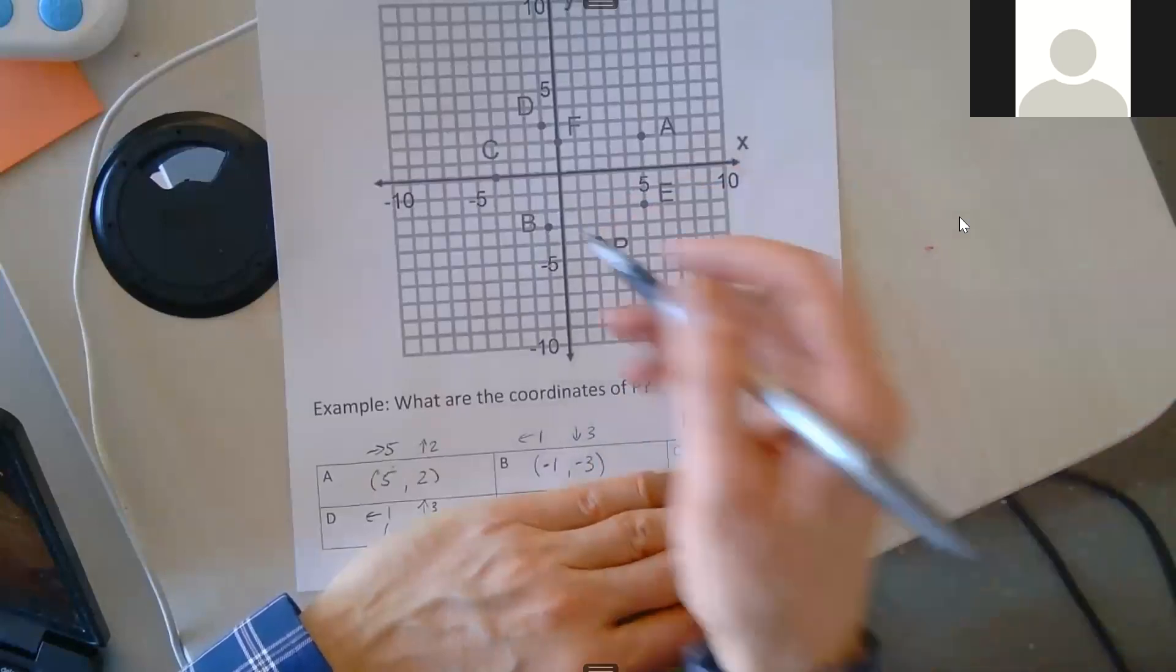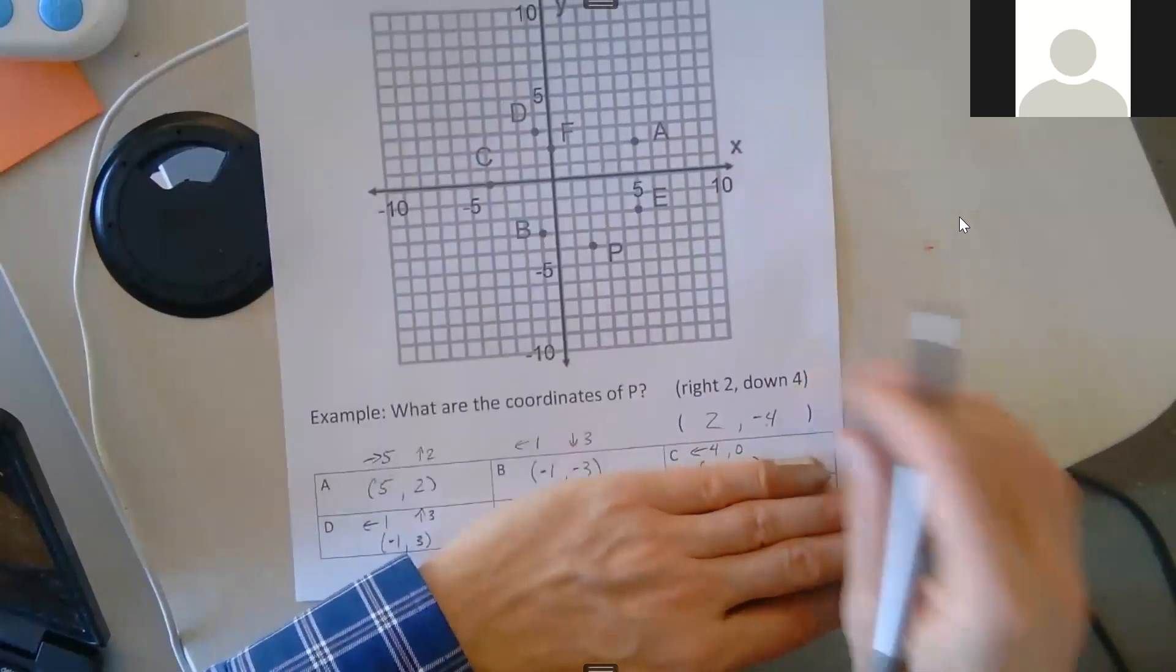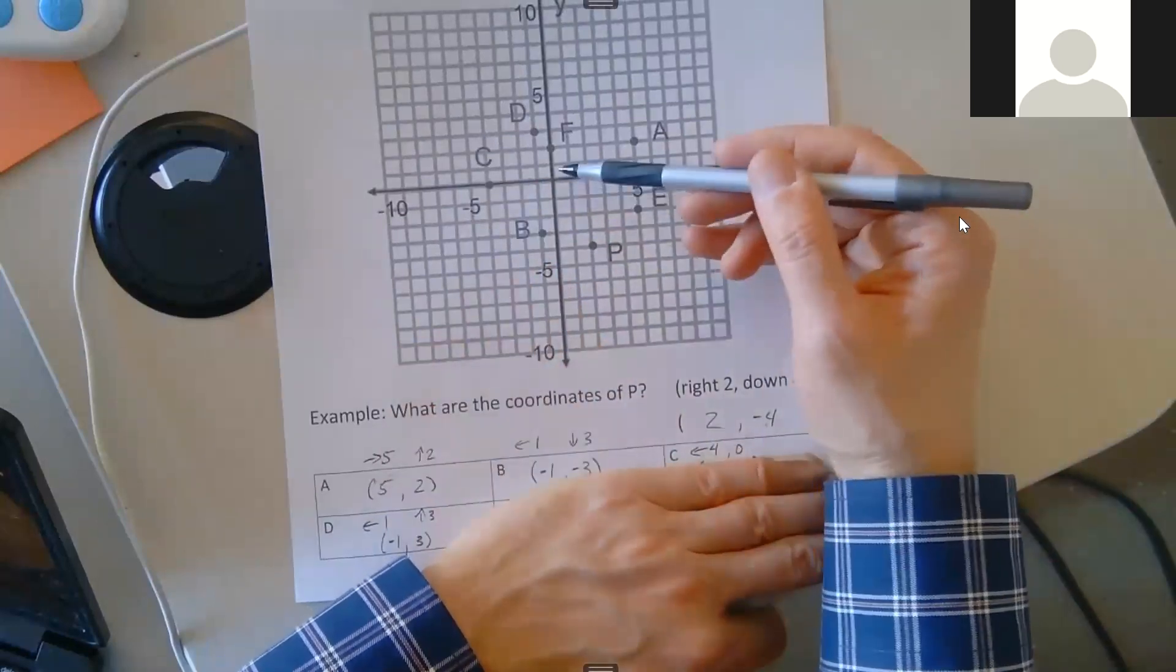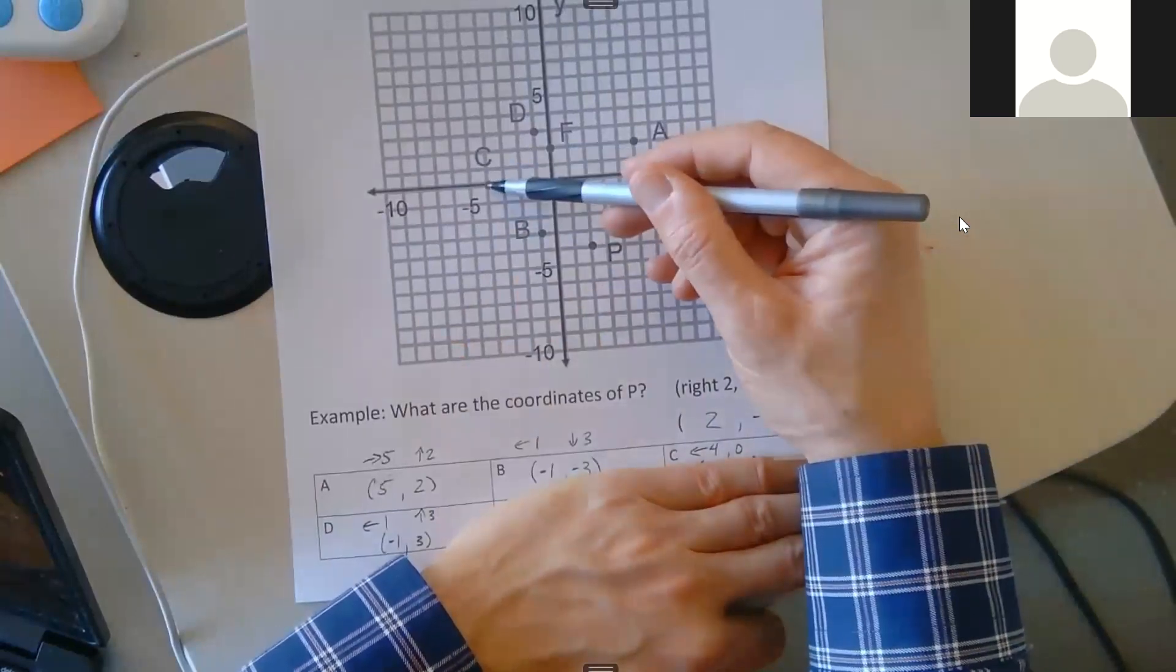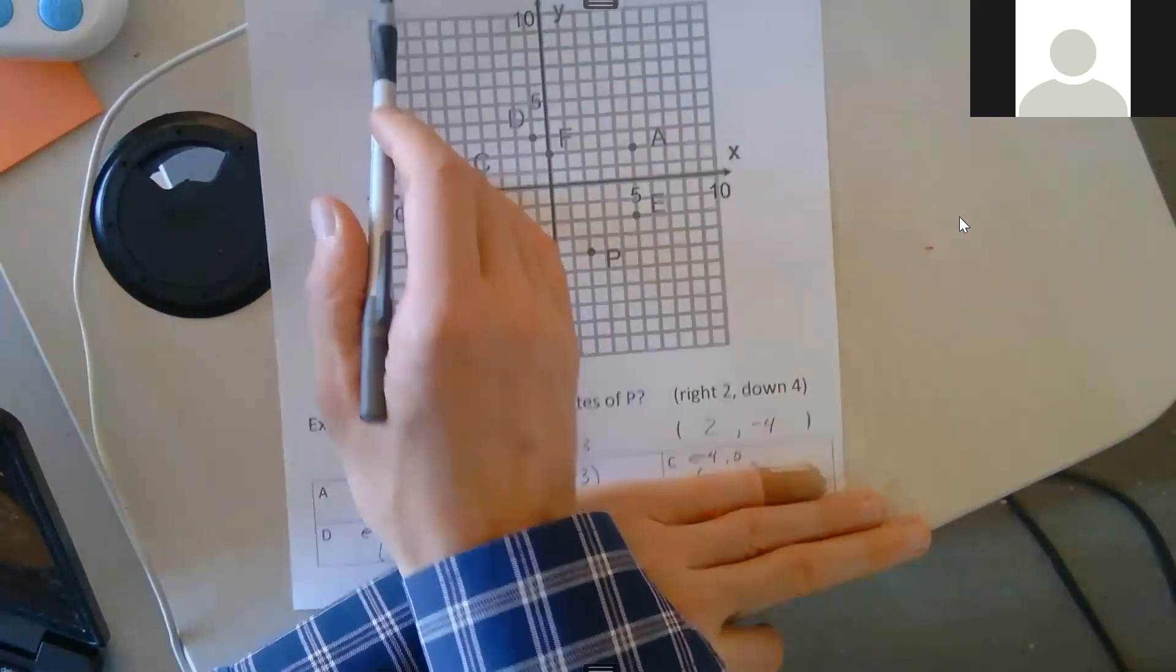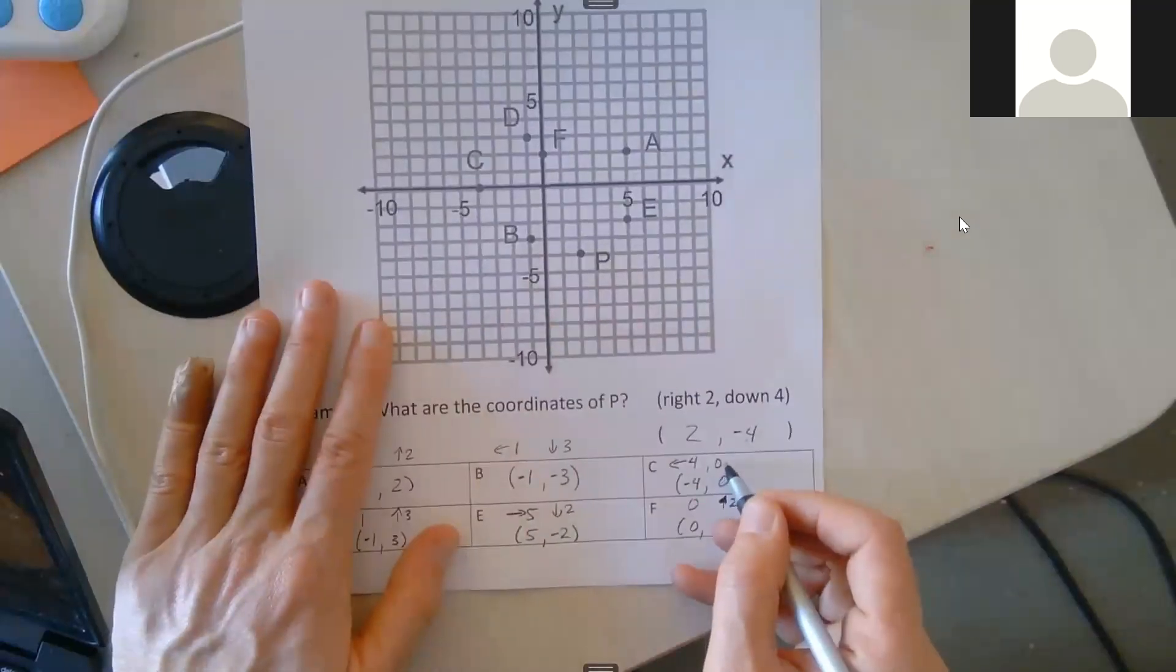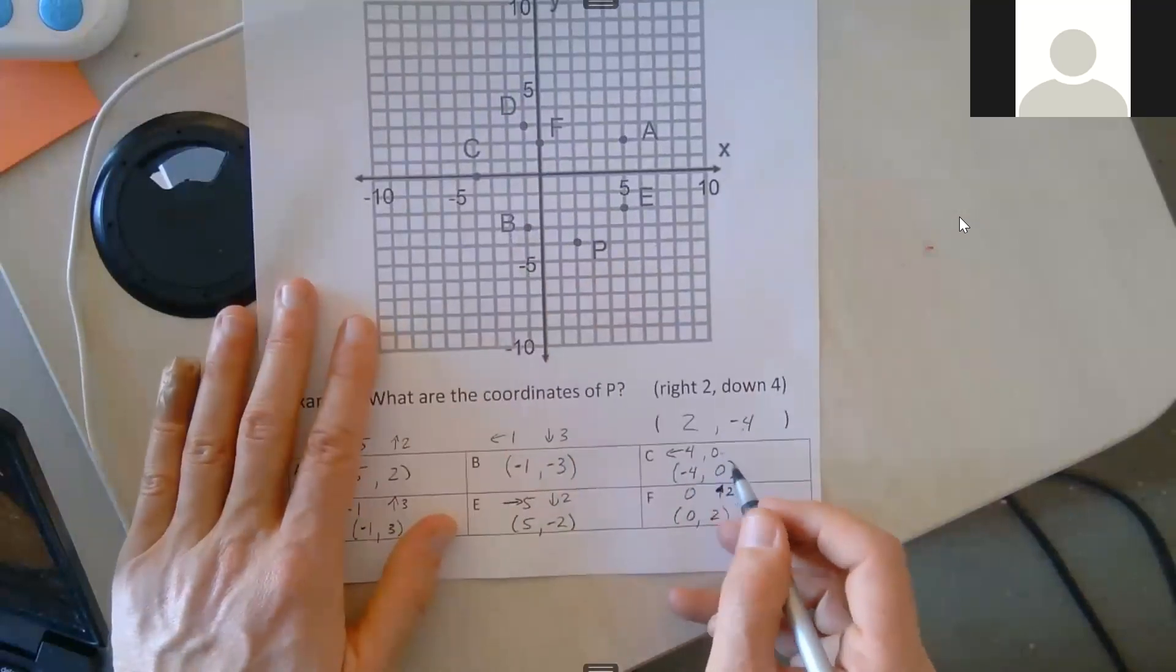Let's do one more, let's do C. To get to C, do I need to move left or right? Left, so that's left four units right there. To get to C, do I need to go up, down, or stay in the same place? Stay in the same place is the key—not down or up. So if a coordinate is zero, do not move for that direction. So in this case we didn't go up or down, so our coordinate should be zero for y. So the left four is negative four, and then not up or down is zero.